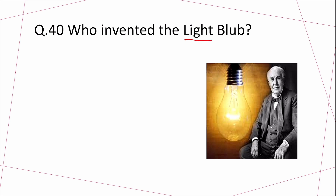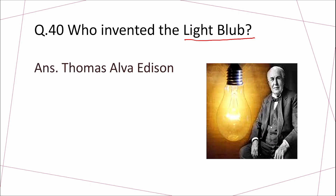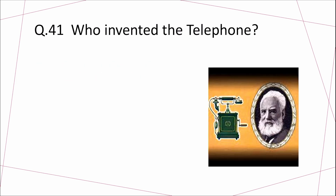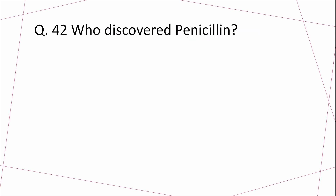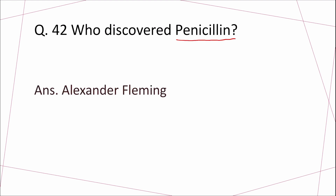Question 40: Who invented the light bulb? Answer: Thomas Alva Edison. Question 41: Who invented the telephone? Answer: Alexander Graham Bell. Question 42: Who discovered Penicillin? Answer: Alexander Fleming.